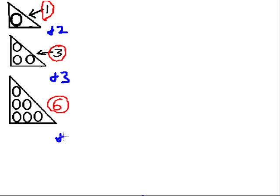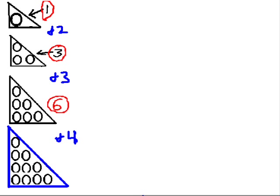Now I'm going to add on four, and let's see what I can do with this. How many do I got here? Well, there was one and there's three — one and two, that's three. Three and three is six. Six and four is ten. Ten. So I got ten, and with ten I can make a triangle.